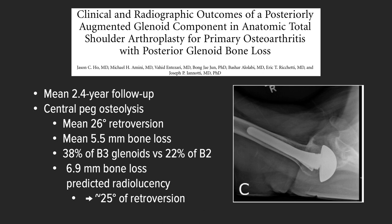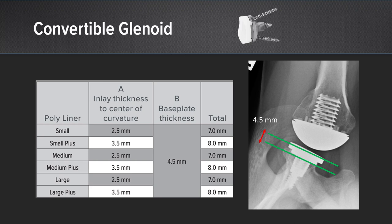What does 6.9 millimeters of bone loss mean? That equates to about 25 degrees of retroversion, which is similar to what Walsh found — patients with 27 degrees of neoglenoid retroversion. If we consider a convertible glenoid, we need to think about the thickness afforded by the implant. In particular, with the universal base plate, we have about 4.5 millimeters of offset provided by the metal implant alone, so you want to consider how much bone loss you're correcting with this implant.